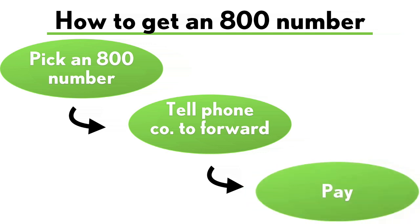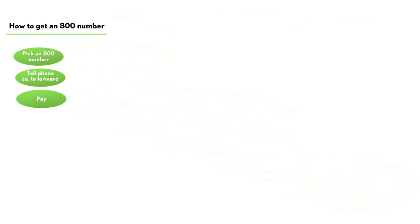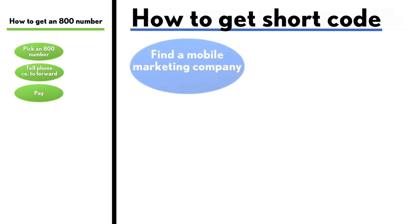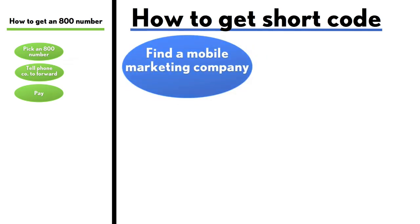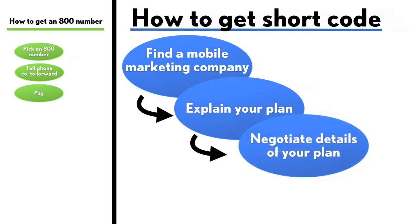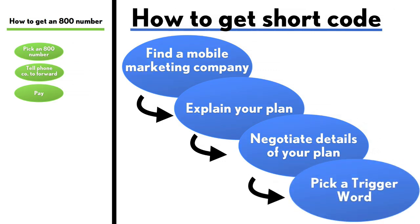It's much harder to get a shortcode. There's an easy way and a hard way — we're going to go with the preferred way, the easy way. First, you find a mobile marketing company that already has a stable of shortcodes. Then you explain exactly what you want to do with your shortcode and what you want to say, and you negotiate the details with the mobile marketing company. Next, you pick a trigger word.